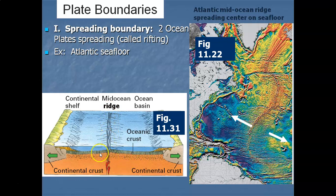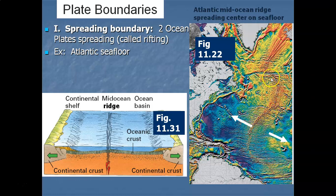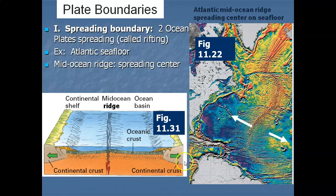The geological term for pulling apart or spreading is called rifting. This is the example of what's going on on the seafloor of the Atlantic Ocean. There's a fracture right down the middle of the Atlantic Ocean where two ocean plates are spreading apart — here's the fracture line making up the seafloor, spreading apart with this big offset that continues up into Iceland. Arrows show the spreading boundary.